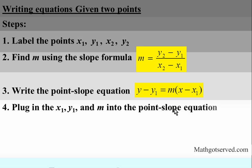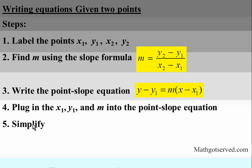We write down our point-slope equation to guide our substitution, then plug in x1, y1, and the slope m that we found in step two into the equation. Lastly, we simplify. This formulation is point-slope form. If the problem asks us to write it in slope-intercept form, we apply step five, which is basically getting y by itself.